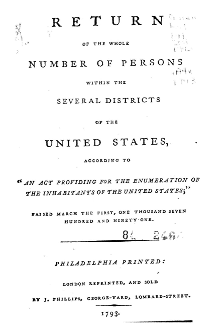Race data are also critical for the basic research behind many policy decisions. States require these data to meet legislative redistricting requirements. The data are needed to monitor compliance with the Voting Rights Act by local jurisdictions. Data on ethnic groups are important for enforcing equal employment opportunities under the Civil Rights Act, identifying segments of the population not receiving medical services under the Public Health Act, and evaluating whether financial institutions are meeting the credit needs of minority populations under the Community Reinvestment Act.